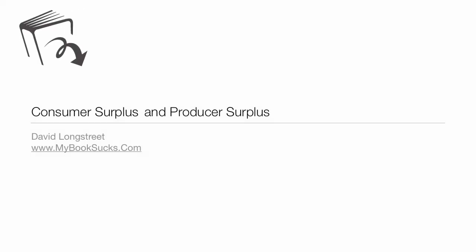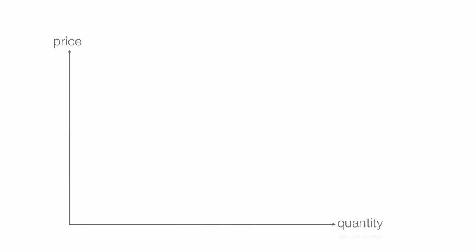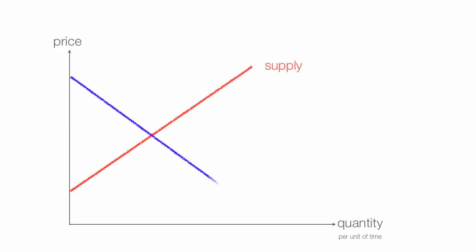In the next tutorial, I'm going to talk about consumer surplus and producer surplus as it relates to price floors and price ceilings. I start out with price on the vertical axis and quantity per unit of time on the horizontal axis. I'll draw in the supply and demand curves. The gray dot is equilibrium — price equilibrium and quantity equilibrium. That's also known as the market price and market quantity.